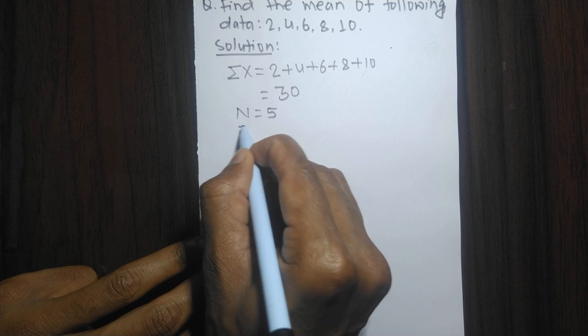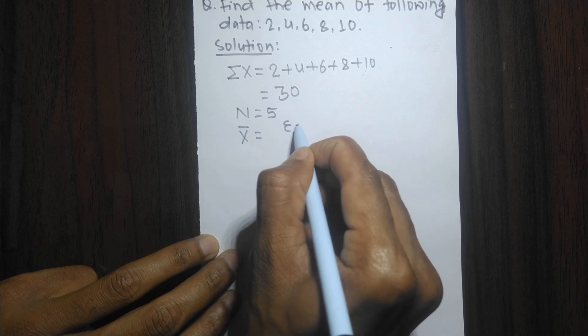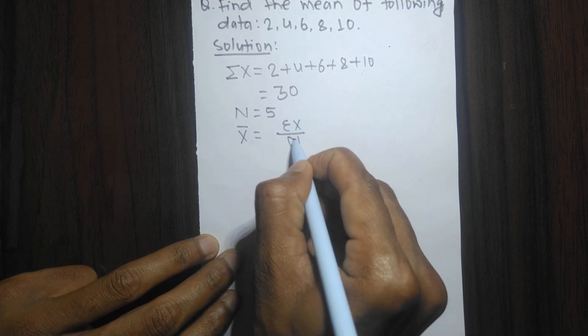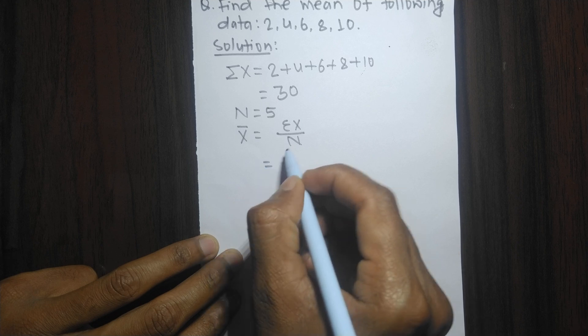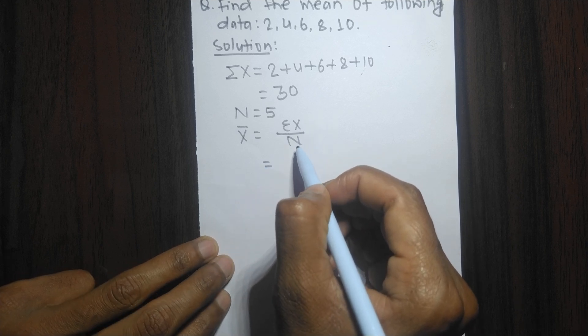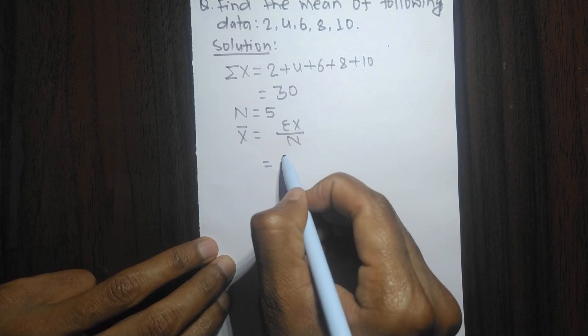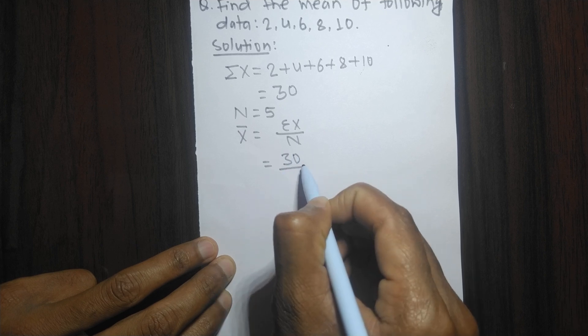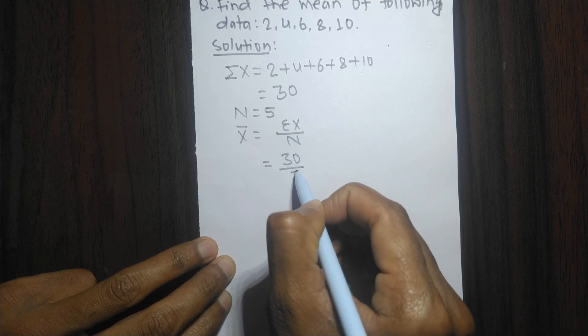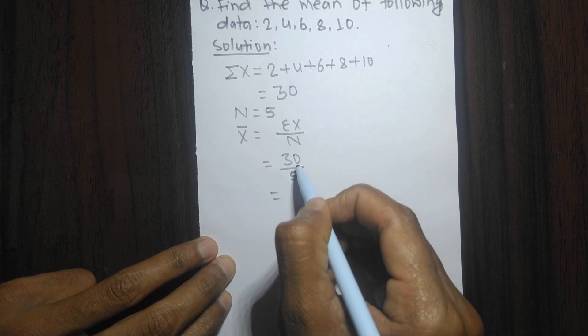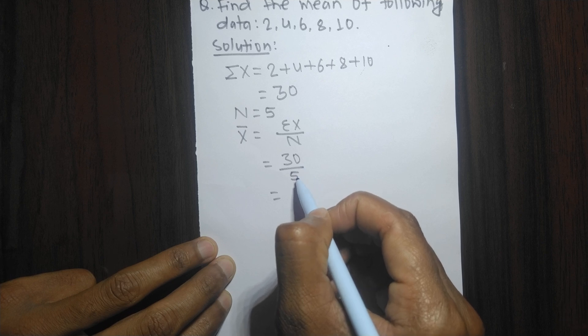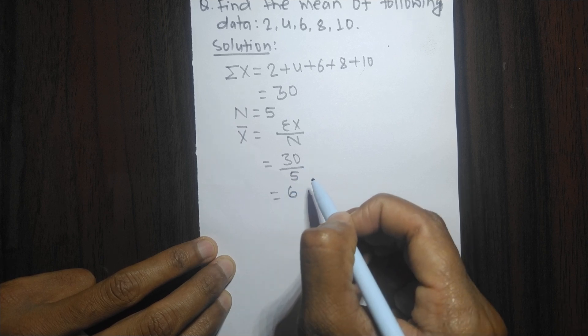The mean is equal to the sum of all numbers divided by the total numbers. That is summation X by N. Its value is 30 divided by N, which is 5, so 30 divided by 5 gives us 6.